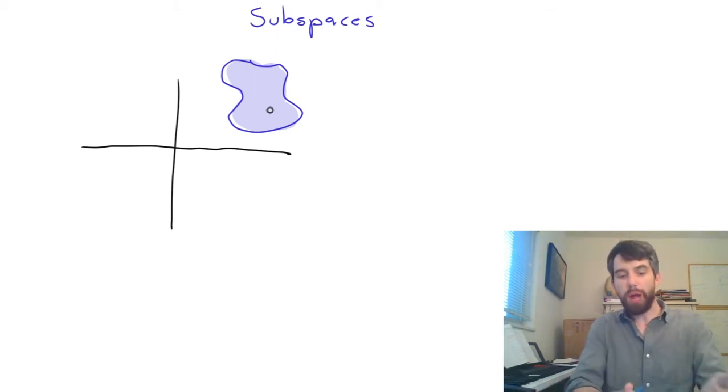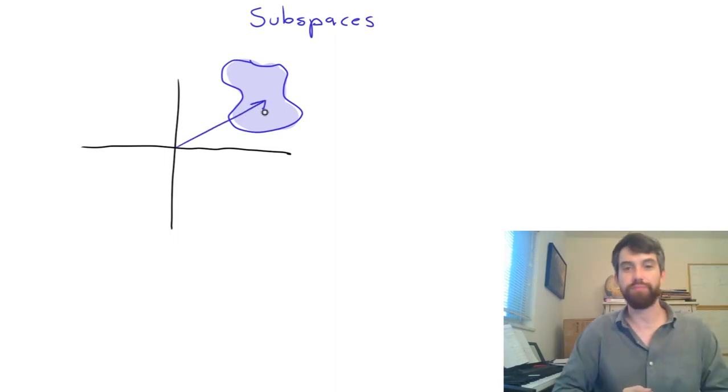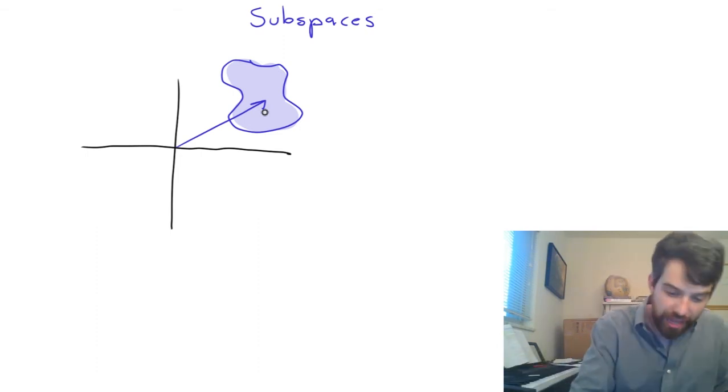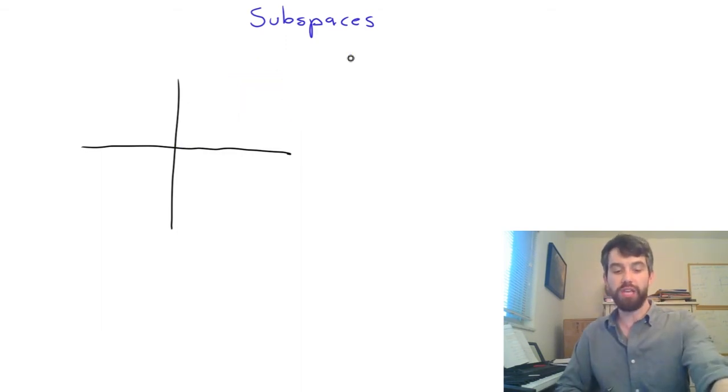And so the problem with a random subset like the one I've drawn is that if I choose some particular vector whose tip is going to end in this particular subset, and then I try to do one of the things in linear algebra to it, like multiply it out by two, then I leave this subset, and the subset doesn't have anything to do with this operation of multiplication by two. So I don't want to have just the old notion of a subset. I want to talk about a subspace.